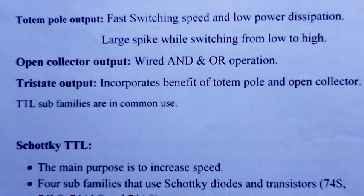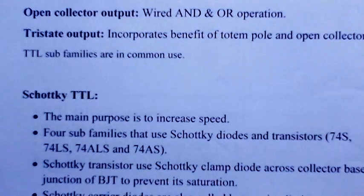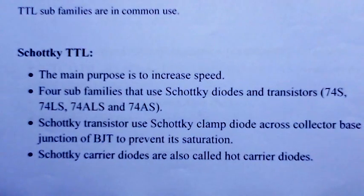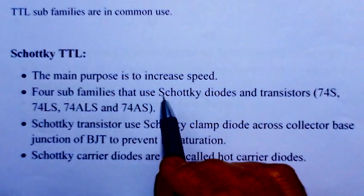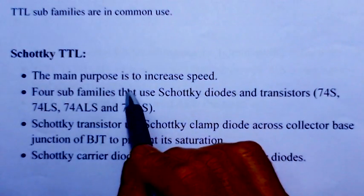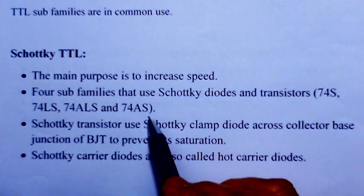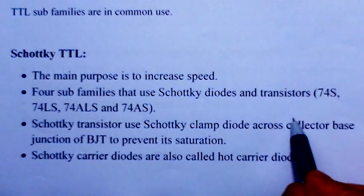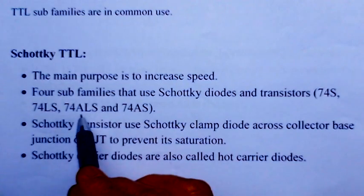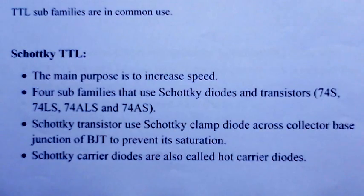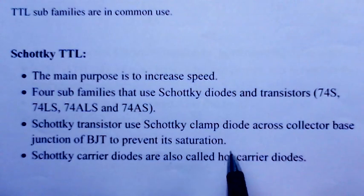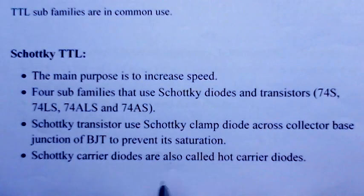TTL subfamilies include the Schottky TTL series, whose main purpose is to use Schottky transistors and diodes to increase speed. Subfamilies using Schottky diodes and transistors include 74AS (advanced Schottky), 74LS (low power Schottky), 74ALS (advanced low power Schottky), and 74S (Schottky). These Schottky transistors use Schottky clamp diodes across the collector-base junction of the BJT so it does not saturate — making them unsaturated devices. Schottky carrier diodes are also called hot carrier diodes.